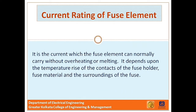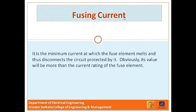Next I will describe some important terms related to fuse. The first is the current rating of a fuse element: it is the current which the fuse can normally carry without overheating or melting. It depends upon the temperature rise of the contacts of the fuse holder, fuse material, and the surroundings of the fuse. This is the normal operating current of the fuse element. Next, fusing current: it is the minimum current at which the fuse element melts and thus disconnects the circuit protected by it. Obviously its value will be more than the current rating of the fuse element.